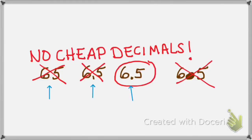On the other hand, we also want to make sure that we have no bolder decimals. For example, right here, that decimal is way too big. No cheap decimals and no bolder decimals — we need to make them normal size.